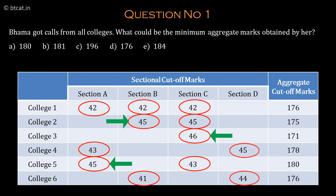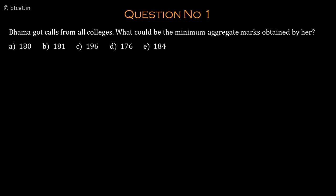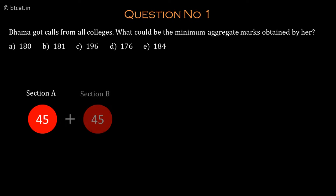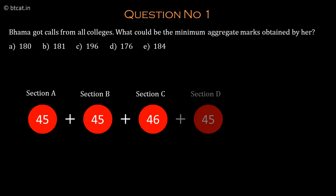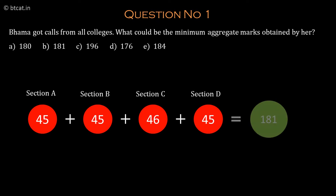So the minimum she is getting is 45 + 45 + 46 + 45, giving a total of 181 marks. We can verify that 181 also clears the aggregate cutoff of all colleges.